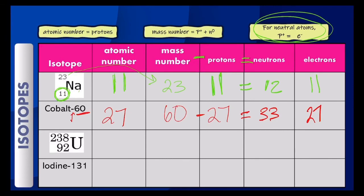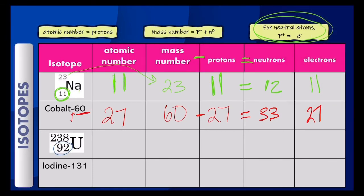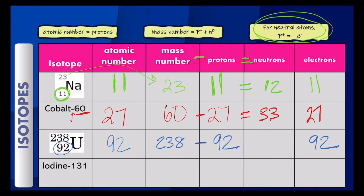Next, we have uranium. The atomic number for uranium is given at the bottom: 92, which is also the number of protons. Because there is no charge on the uranium, that also means 92 electrons. The mass number is given at the top: 238. To find the neutrons, subtract 238 minus 92, which gives us 146 neutrons.